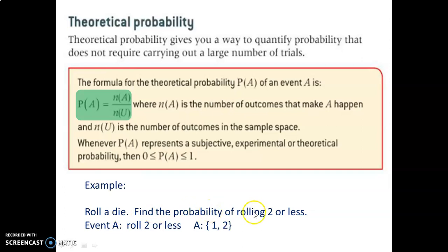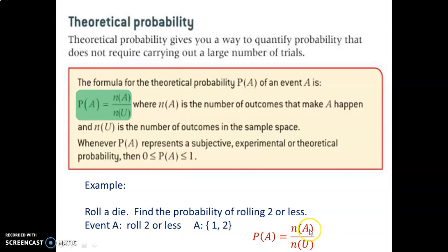You roll a die and find the probability of rolling two or less — we'll call that event A. Event A contains the set of possible outcomes of rolling a one or a two. To calculate our probability, we use the formula: the probability of event A occurring is the number of ways the event can occur divided by all the possible outcomes in the universal set. The number of ways for A to occur is two, out of all six possible rolls, giving us two out of six.